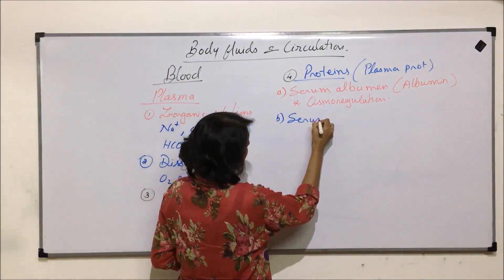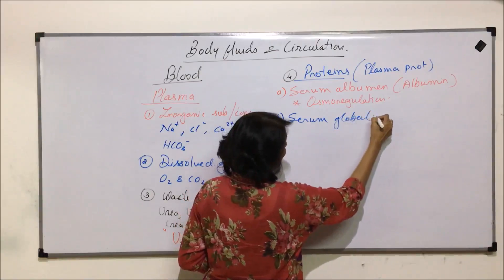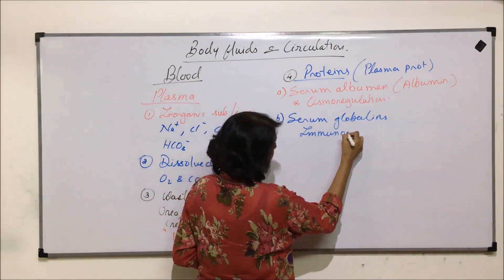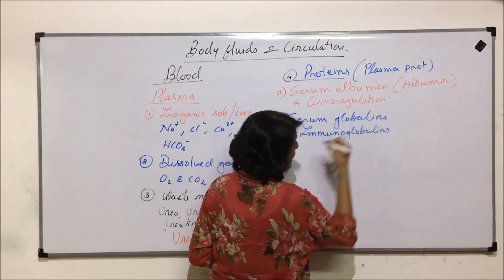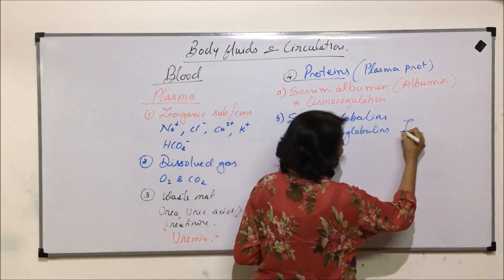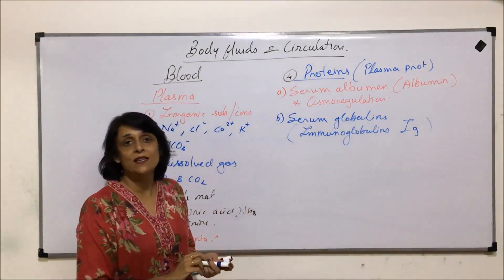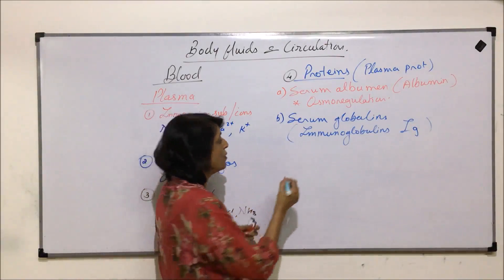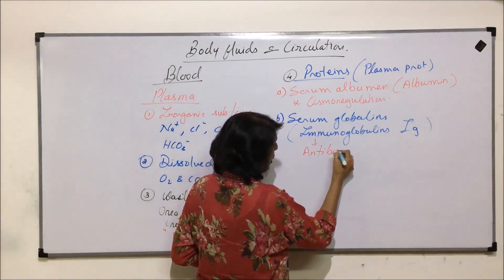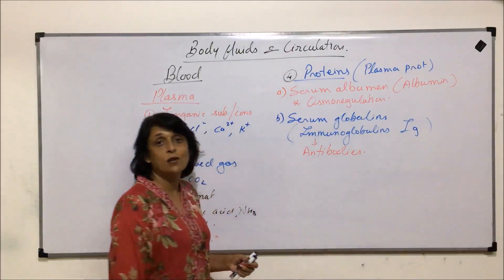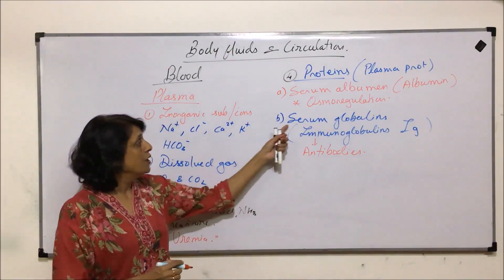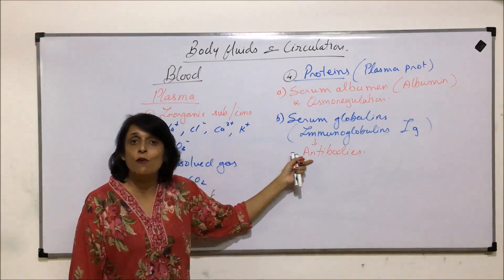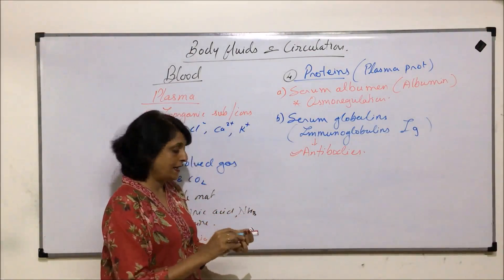The next category is serum globulins, also known as immunoglobulins, written as Ig. As the name tells us, they are responsible for providing immunity. These immunoglobulins act as antibodies, which are produced against specific antigens.